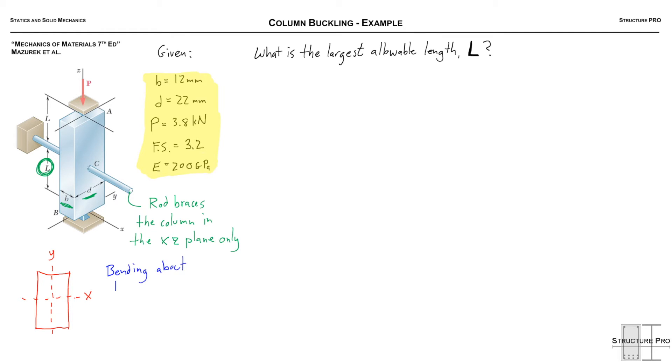So bending about the Y axis we can see that would normally be weaker. We can see that intuitively because the height is lower there. But the L effective is only L whereas it's 2L for the X axis and this is because it's braced at C.